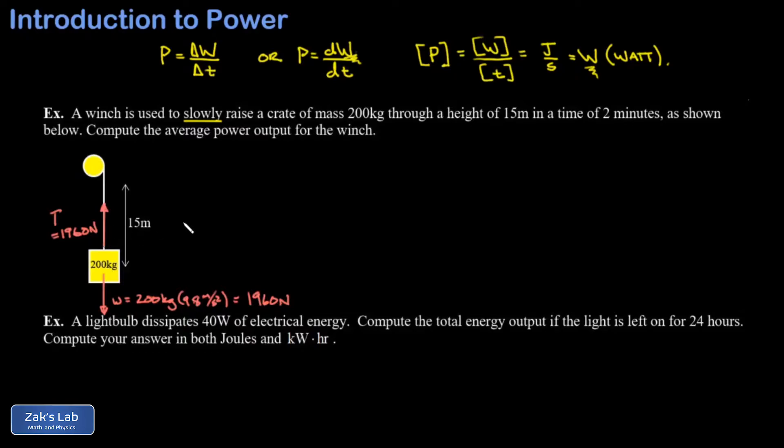That's a constant force in exactly the same direction as the displacement vector, which is 15 meters pointing straight up. So our work is just force times displacement. I'll call the displacement delta y in this case. We get 1960 newtons multiplied by 15 meters, which gives us 29,400 joules. To be consistent with my notation, I'll call that work delta W.